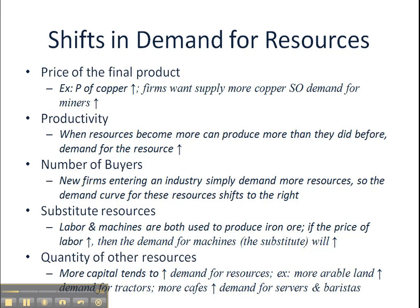Price of the final product — when the price, for example, of copper rises, the demand for copper miners is going to increase, so the demand curve for copper miners would shift out to the right. Mining firms will hire more workers at each wage rate in order to produce more copper and earn higher revenues if the price of copper goes up.